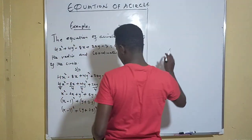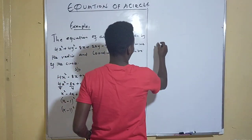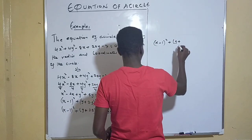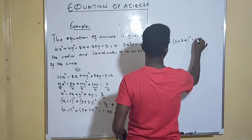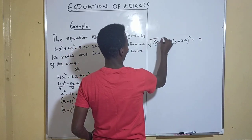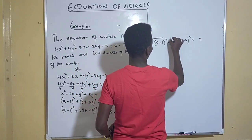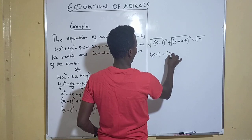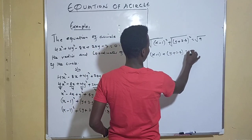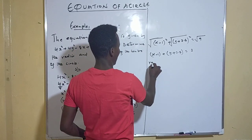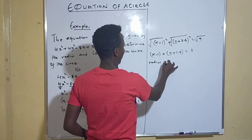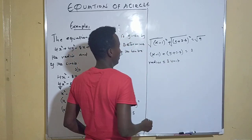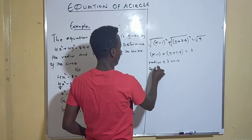So we have (x - 1)² + (y + 2.5)² = 9. Introducing the square root throughout gives x - 1 + y + 2.5 = 3. Therefore our radius is 3 units.